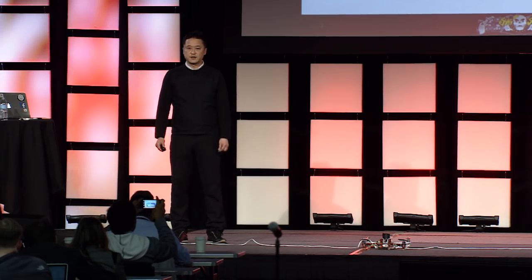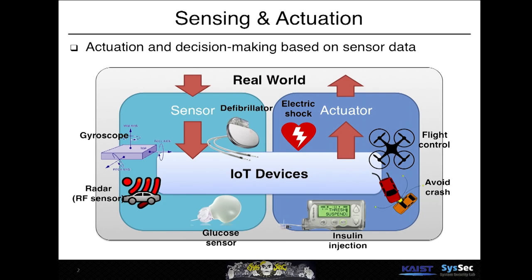Sensors have been used in many IoT devices, especially for sensing and actuation systems. For example, gyroscopes are used for balancing drones. Radar has been used to measure distance in self-driving cars. Glucose sensors have been used in insulin pumps. Because sensors are used in many safety-critical systems, failures in sensors can cause serious problems.